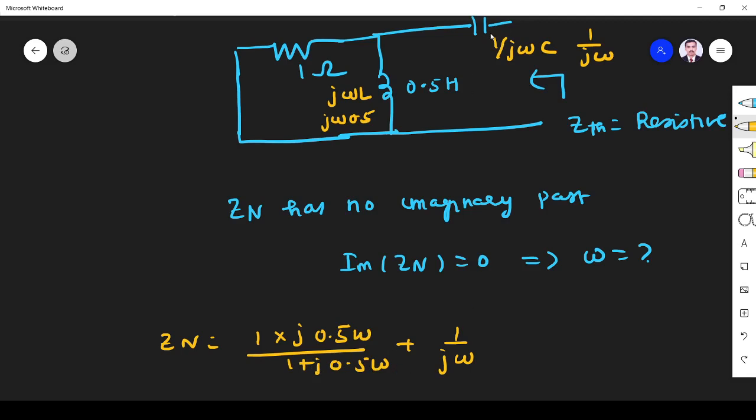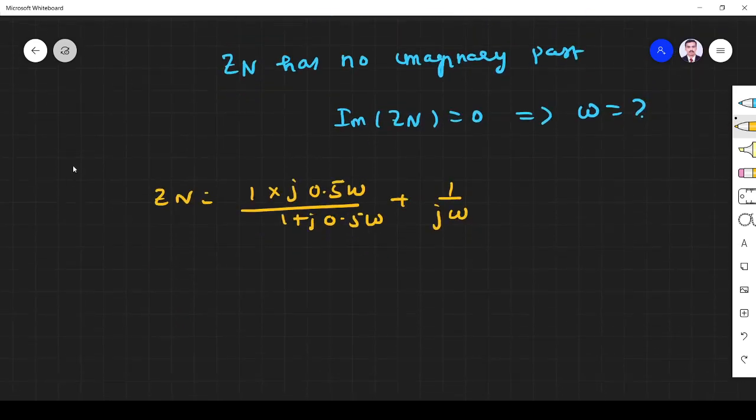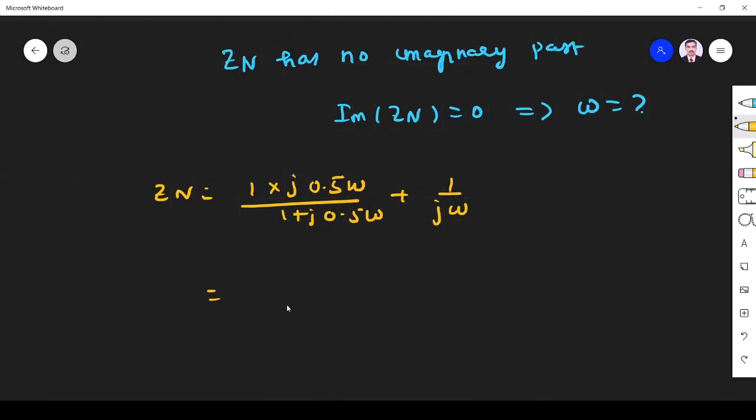...plus this is in series, 1/(jω). So if you simplify, you get... Let me simplify further.